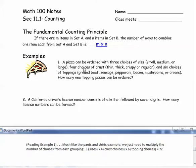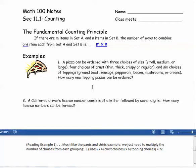Example 1: A pizza can be ordered with three choices of size, and they list them, four choices of crust, and they list them, and six choices of toppings. How many one-topping pizzas can be ordered? Much like the pants and shirts example, we're choosing one item from each of the groupings, so we just need to multiply the number of choices from each grouping. Three sizes times four crust choices times six toppings equals seventy-two.